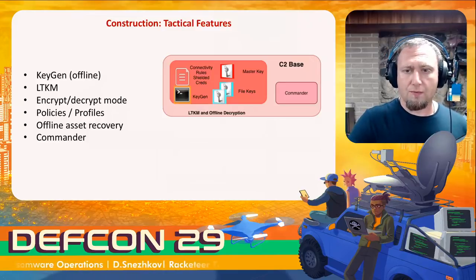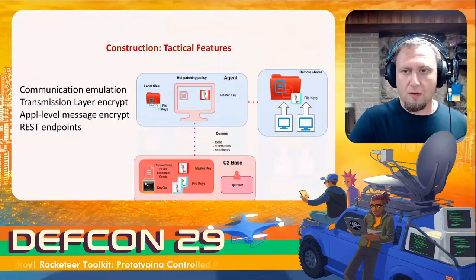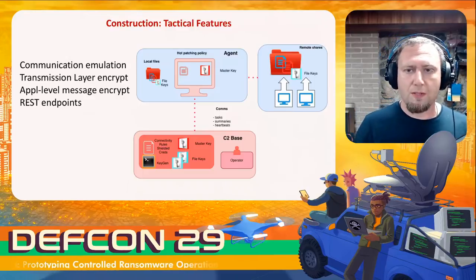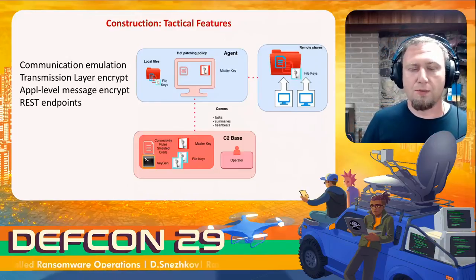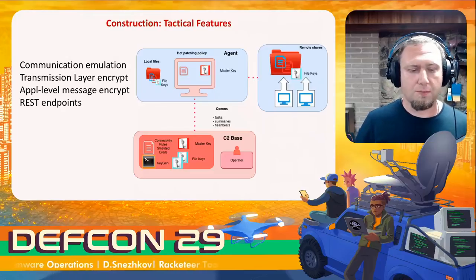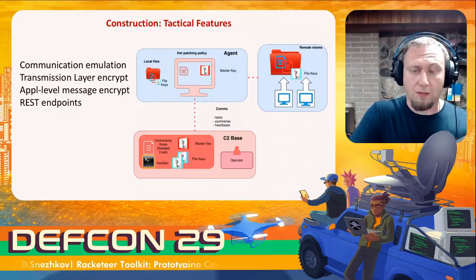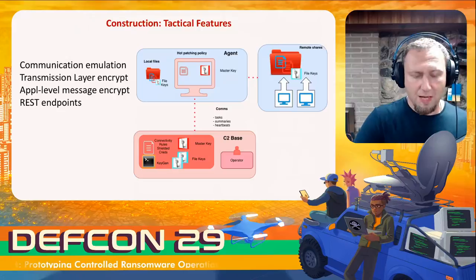We have offline asset recovery via a hub-and-spoke model where a commander accepts the agent and manages it. We need communication emulation reflecting how ransomware usually interacts — encryption at the non-transport layer but also application-level message encryption for the agent. The toolkit emulates ransomware using REST communication in a PubSub model: the agent comes in, asks for a task, executes it, and uploads results. Everything is distributed in this way.